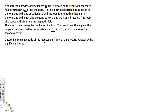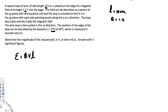To find the induced EMF, we use the equation: EMF = BvL, where B is the magnetic field, v is the velocity, and L is the length. We have the length — 10 centimeters — and the magnetic field strength — 1.2 tesla — but we don't have the velocity. We have the position function x, so we need to find velocity from that.